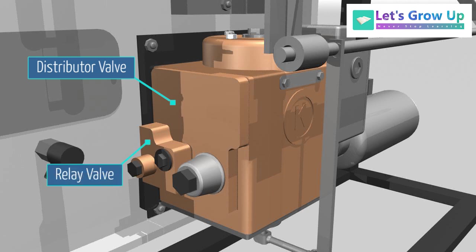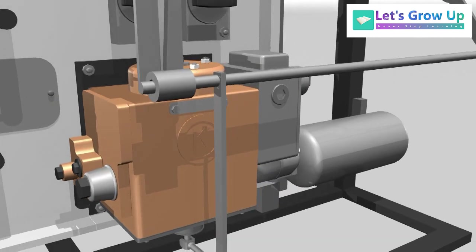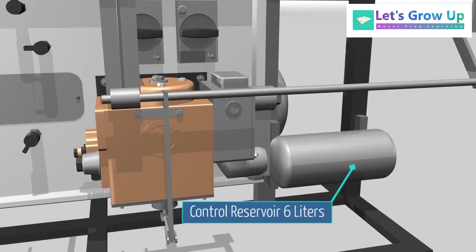The relay valve is attached with it. The brake cylinder pressure is 3.8 kg per square centimeter for all LHB coaches. Control reservoirs: 6 liters.